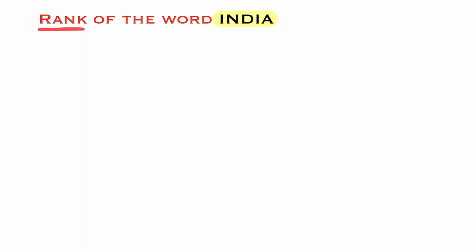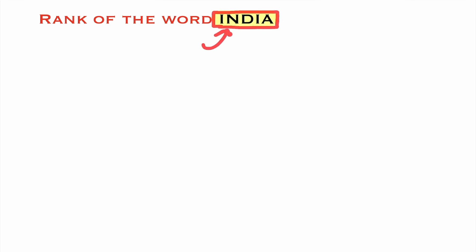How to find the rank of the word India. If you observe all the letters of the word India, the letter I is repeated two times. In earlier videos we learned how to find the rank of a word, but in those cases letters were not repeated. But in this word India, two I's are alike. So when letters of a word are repeated, how do we find the rank of the word with the help of a shortcut?